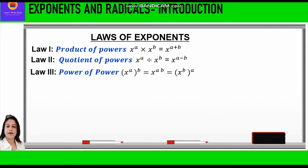The third law is power of power, that is x raised to power a, whole raised to power b, is equal to x raised to power ab. That means we multiply the powers. The fourth law is power of product — when we have two numbers multiplied together and raised to power a, we distribute a between them: x into y raised to power a is equal to x raised to power a into y raised to power a.